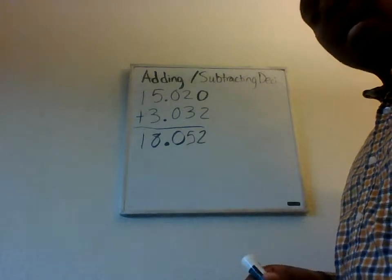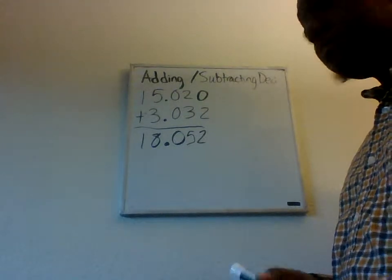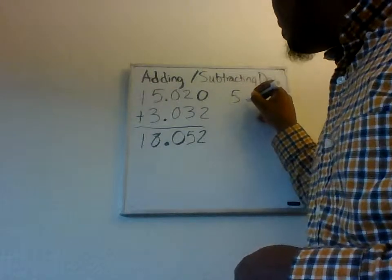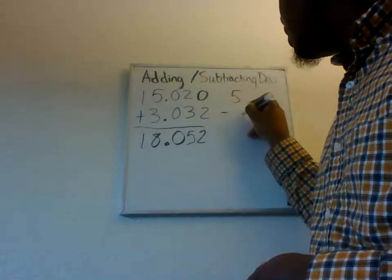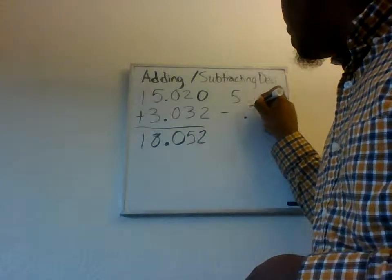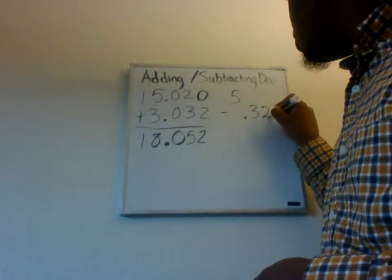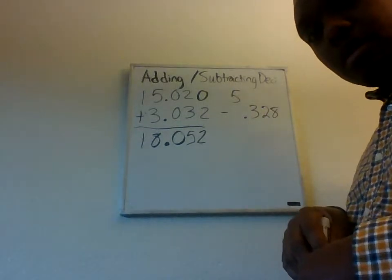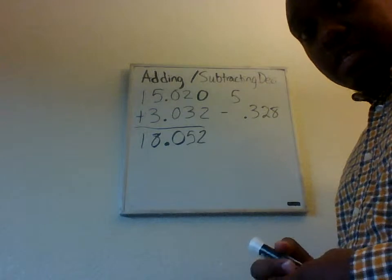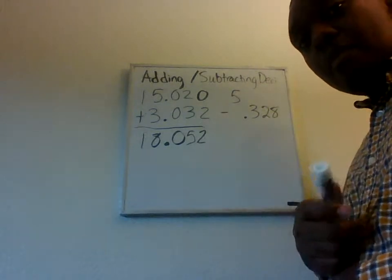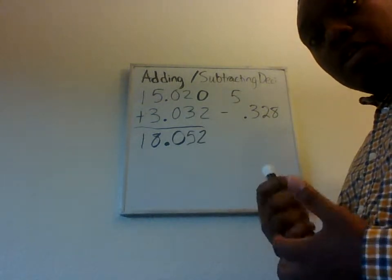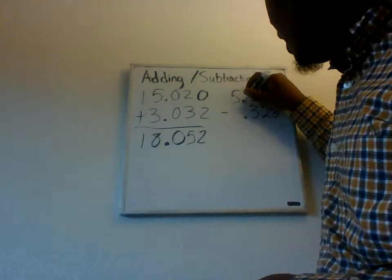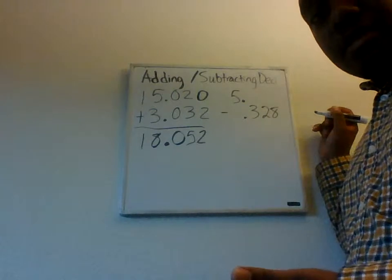Okay? Let's look at an example with subtraction. So, we're going to do five minus 0.328. Okay? Well, the first number is just a whole number. There is no decimal there. But we talked about how you can represent a whole number as a decimal by adding a decimal in it. And if you want to, you can add zeros there.